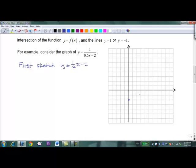So 0.5x minus 2. Here's negative 2, rise 1, run 2, rise 1, run 2. So there's our original graph.